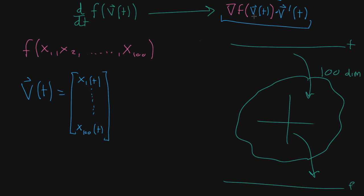The gradient of f evaluated at v of t, evaluated at your original output, dot product with the derivative of v, the vectorized derivative. And what that means for v, you're just taking the derivative of every component.